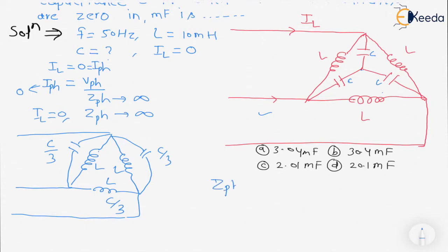The value of Z_ph will be equal to infinite when we will see in the phase. Then only we have the capacitance and the inductance value. It will be possible when the value of X_C should be equal to X_L.